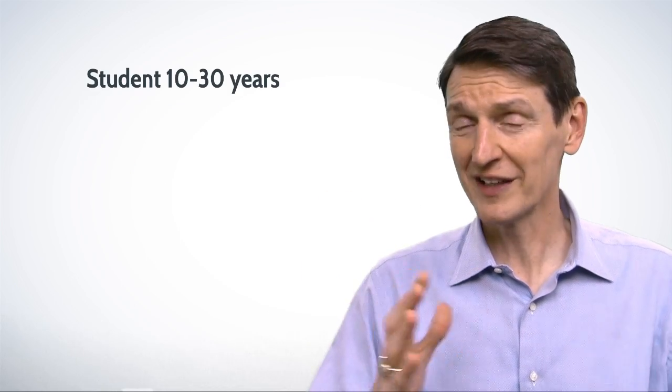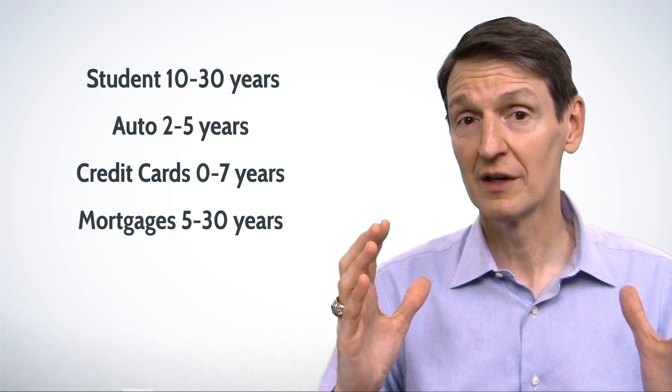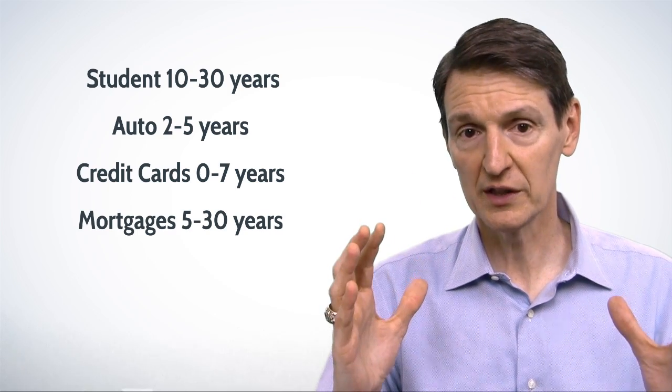So there's timeframes on these as well. Student loans, they can go from 10 to 30 years. Auto, 2 to 5 years. Credit cards, 0 to 7 years. Mortgages, 5 to 30 years. So you've kind of got the basics now of those four elements.